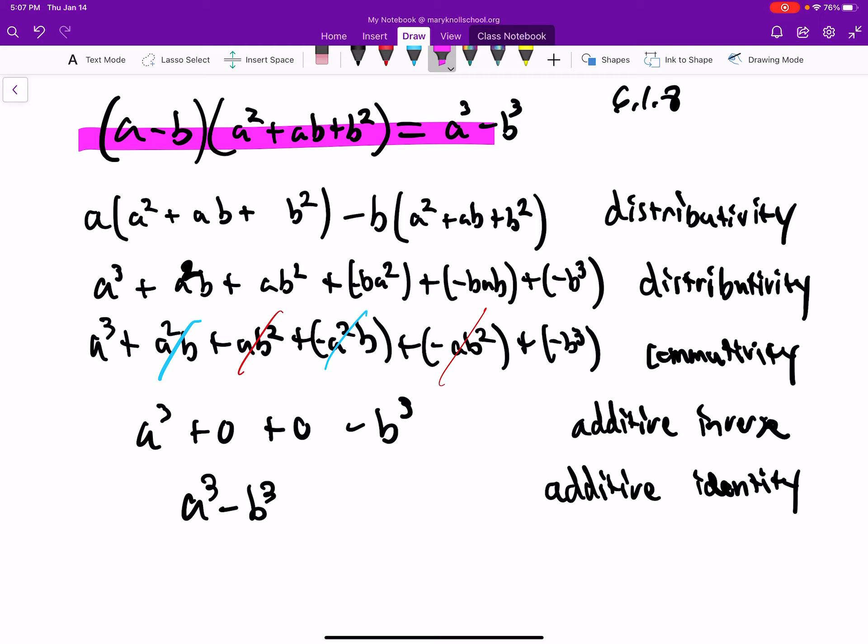So first thing we do is the distributive property. We're distributing A across all this, and then also B across all this too. That's what we get here below. Then we distribute this across all this, and this across all this. That's why we use the distributive property twice.